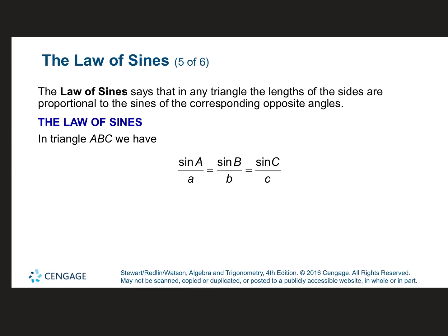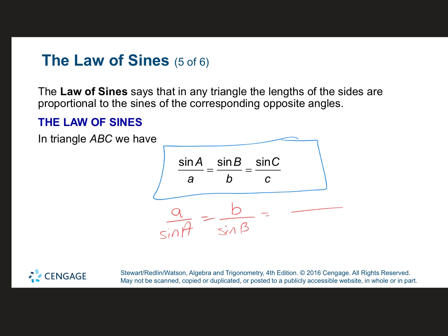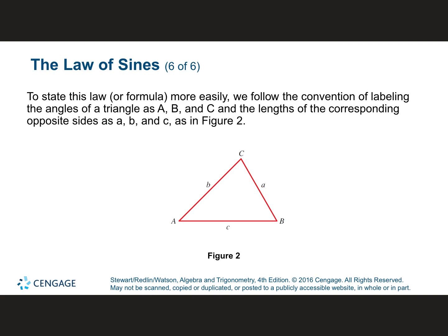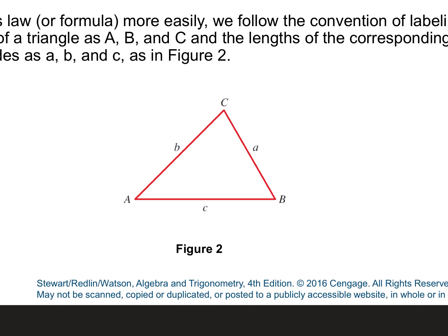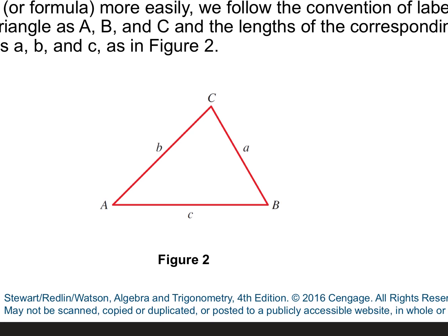The Law of Sines is just a proportion. You keep angles with their corresponding side measures: sine A over side a equals sine B over side b equals sine C over side c. You can also write it with the side lengths on top and angle measures on the bottom — that's totally fine. Just keep sides with sides and angles with angles.